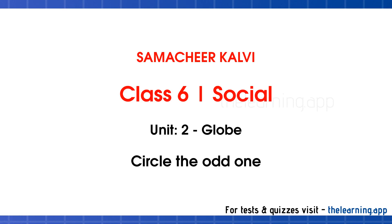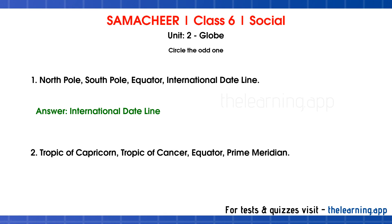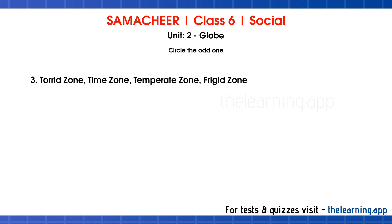Circle the odd one. Question 1: North Pole, South Pole, Equator, International Date Line. Correct answer is International Date Line. Question 2: Tropic of Capricorn, Tropic of Cancer, Equator, Prime Meridian. Correct answer is Prime Meridian. Question 3: Torrid zone, Time zone, Temperate zone, Frigid zone. Correct answer is Time zone.